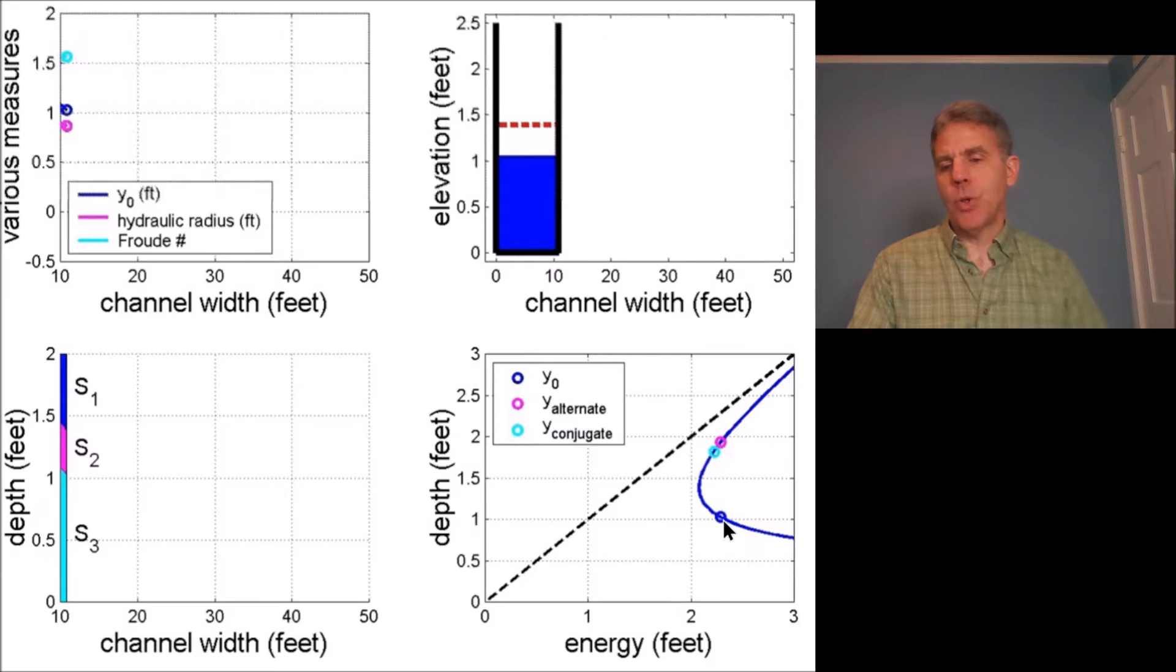Normal depth, you can see is on the supercritical branch and vertical to that is the alternate depth and then slightly less than that is the conjugate depth. The horizontal distance that separates the normal depth from the conjugate depth would be a reflection of the energy loss should a hydraulic jump take place from normal depth to that conjugate.